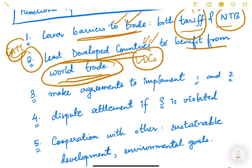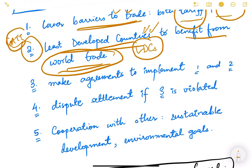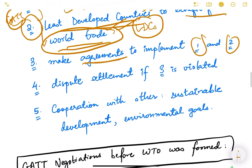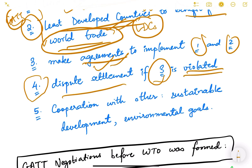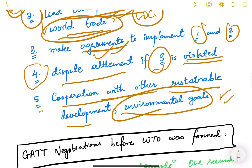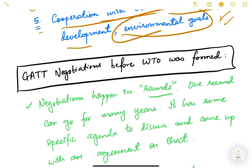Third, WTO must make agreements to implement the first two objectives — without agreements, these are just empty talks. Fourth, dispute settlement: if agreements are violated, there must be a dispute settlement body. For example, if China violates certain agreements, a complaint can be filed and the dispute settlement body takes a decision. Fifth, cooperation with other bodies on goals like sustainable development and environmental goals. These are the five main functions of WTO.